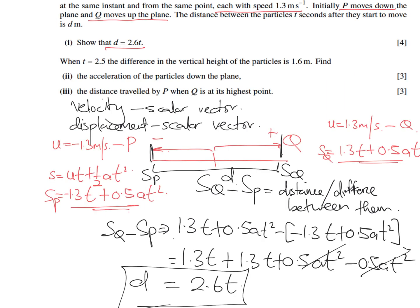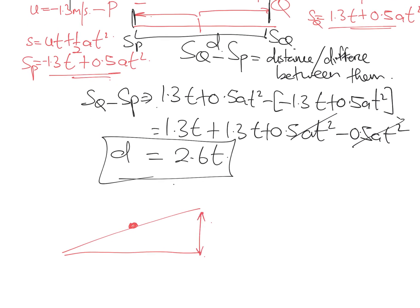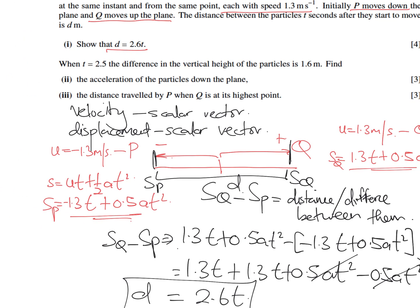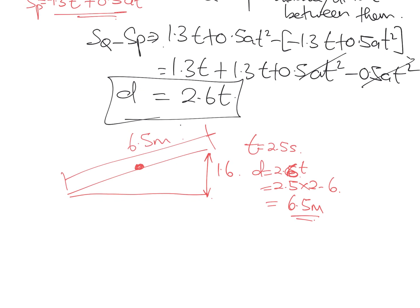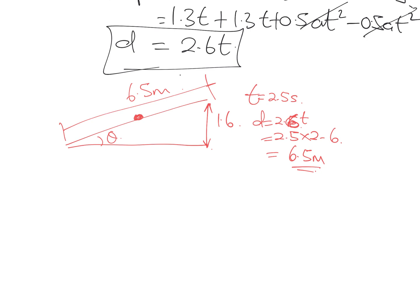When t equals 2.5 seconds, the difference in vertical height between the particles is 1.6 metres. We need to find the acceleration of the particle down the plane. First, the distance D = 2.6 × 2.5 = 6.5 metres. Then sin θ = 1.6 / 6.5, giving θ = 14.25°, approximately 14.3 degrees.